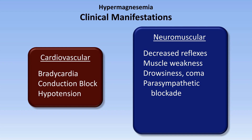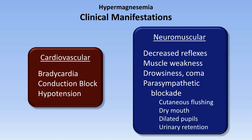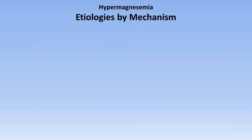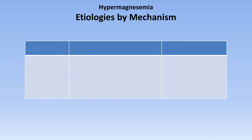Signs of parasympathetic blockade include cutaneous flushing, dry mouth, dilated pupils, and urinary retention. The etiologies of hypermagnesemia are pretty minimal. First is renal failure. The kidneys are the only known place in the body where magnesium levels are sort of regulated, and if they aren't working properly, there is no way for the body to get rid of excessive magnesium that it may have absorbed from the gut.